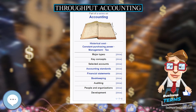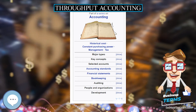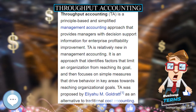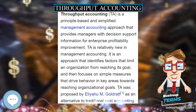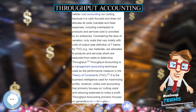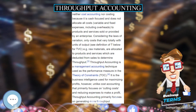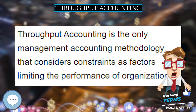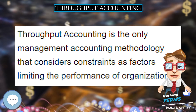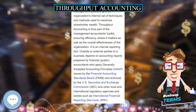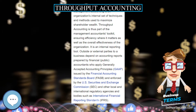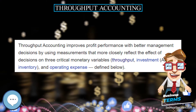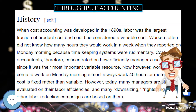Throughput Accounting (TA) is a principle-based and simplified management accounting approach that provides managers with decision support information for enterprise profitability improvement. TA is relatively new in management accounting. It is an approach that identifies factors that limit an organization from reaching its goal, and then focuses on simple measures that drive behavior in key areas towards reaching organizational goals.